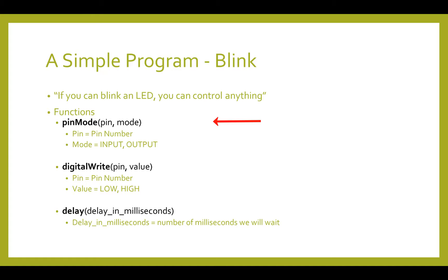Perhaps we'll get into DACs at a later time. When a pin is set to output via the pinMode function, we can control it using digitalWrite — the second built-in Arduino function we'll use. It sets the value of a pin to either low (0 volts) or high (3.3 volts). Finally, we'll be using the delay function, which delays for a specified amount of time in milliseconds before executing the next piece of code in the program.